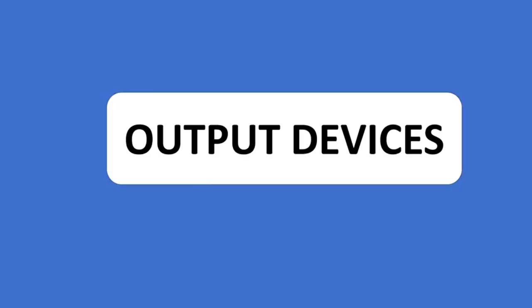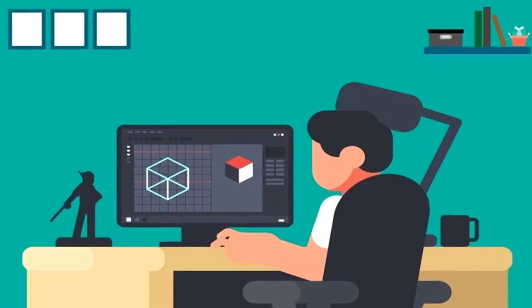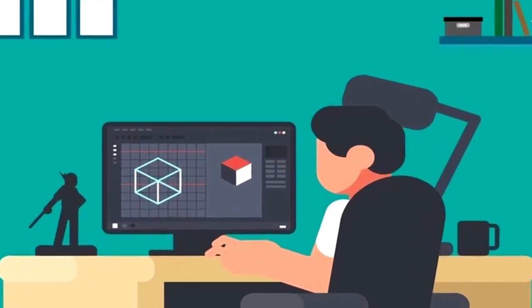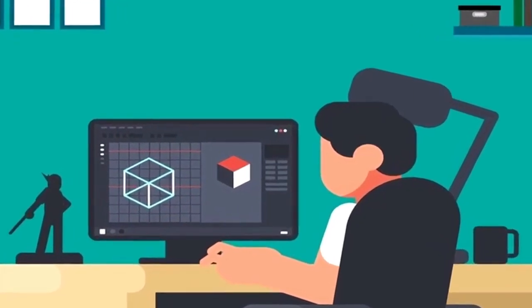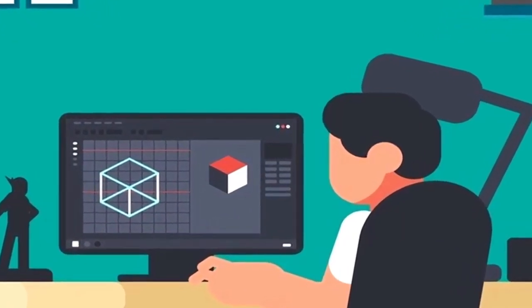Output Device. An output device receives data or information from the central processing unit. Using output devices, a computer can interact with the human.